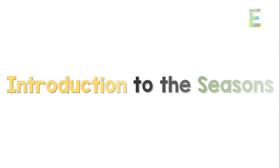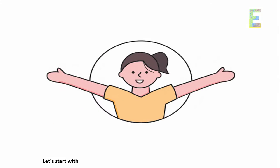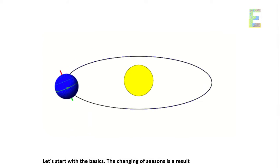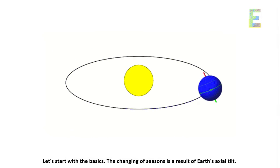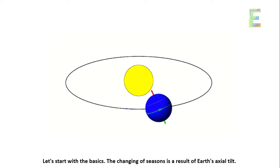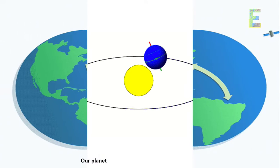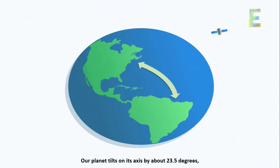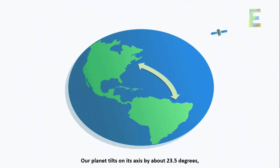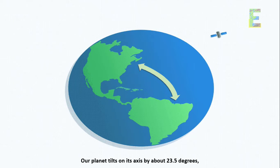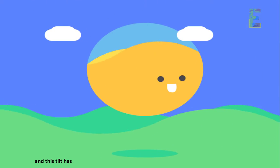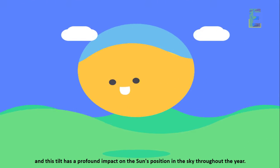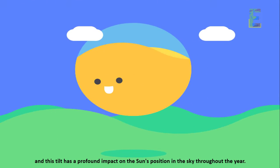Introduction to the seasons — let's start with the basics. The changing of seasons is a result of Earth's axial tilt. Our planet tilts on its axis by about 23.5 degrees, and this tilt has a profound impact on the sun's position in the sky throughout the year.